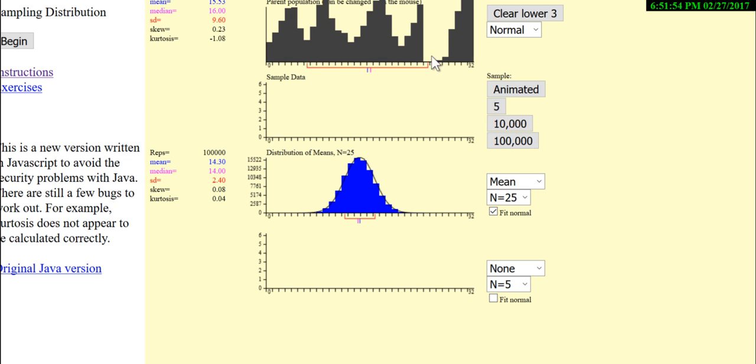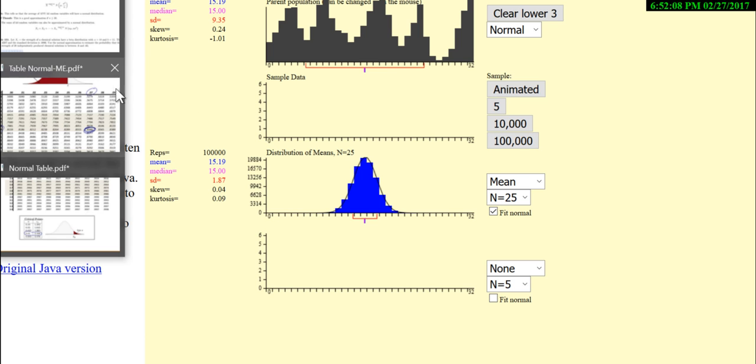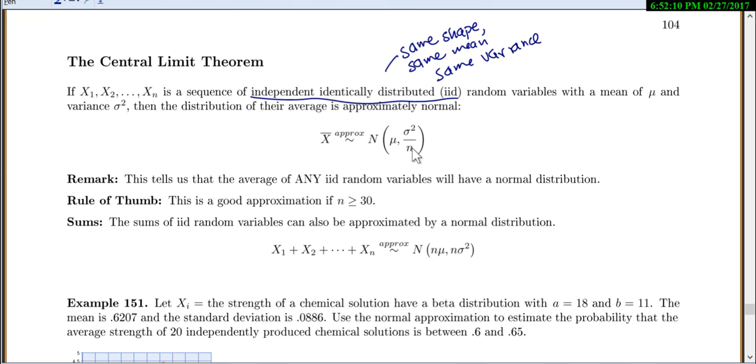No matter what I started with, that's going to be true. It will look normal, the mean will be the same, but my variance will always be skinnier. My averages will always be skinnier, it has a smaller variance, because we have to divide our variance by n.